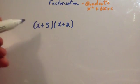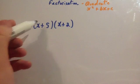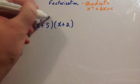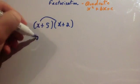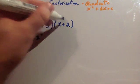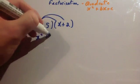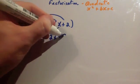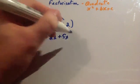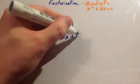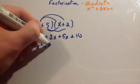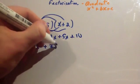Let's have a look at what happens whenever you expand brackets. You may have heard the term FOIL whenever you expand brackets like this. So x times x is x squared, x times 2 is plus 2x, 5 times x is plus 5x, and 5 times 2 is plus 10. So you're going to get x squared plus 7x plus 10.